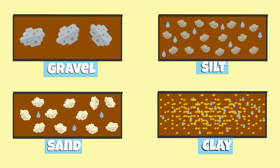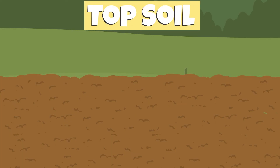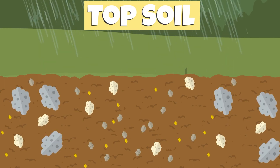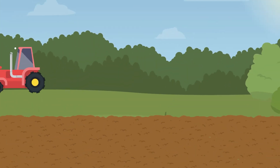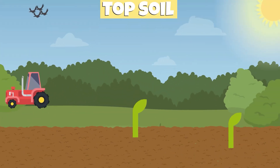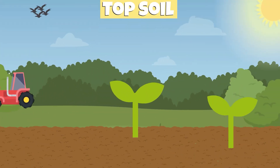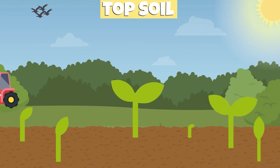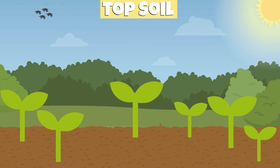In order to support plant growth, soil must retain just the right amount of water. Topsoil contains a combination of particles of different sizes, some large and some small, which retain just the right amount of water and create a nutrient-rich environment that supports plant growth.